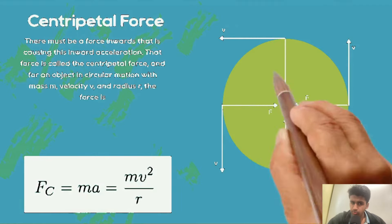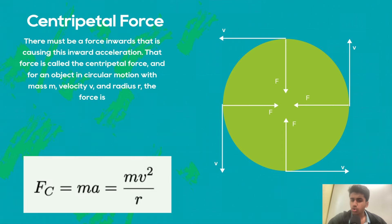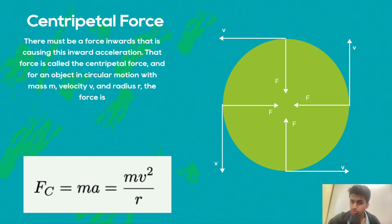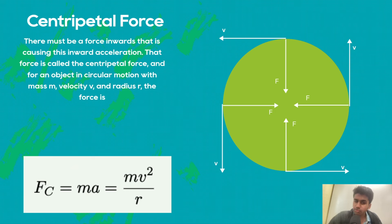Now, centripetal force. We know that force and acceleration point in the same direction. And if centripetal acceleration points inwards, then the force must also point inwards. This force is known as centripetal force. For an object in circular motion with mass m, velocity v, and radius r, we can find the force as mv squared over r.